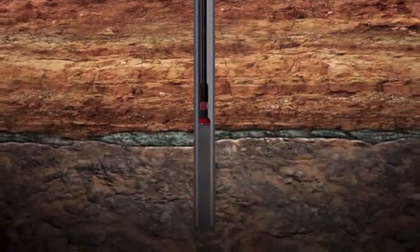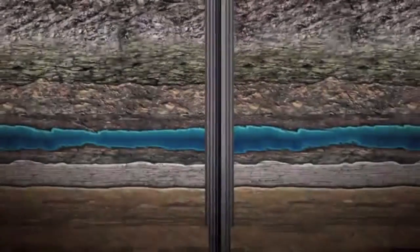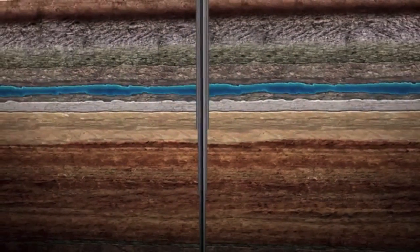The pipe and drill bit are lowered back into the well where the drilling continues. Another layer of casing and cementing is then constructed to create a second permanent protective barrier. Multiple layers of casing and cementing are critical to safe well construction and drinking water protection.